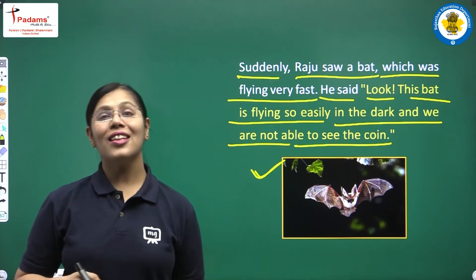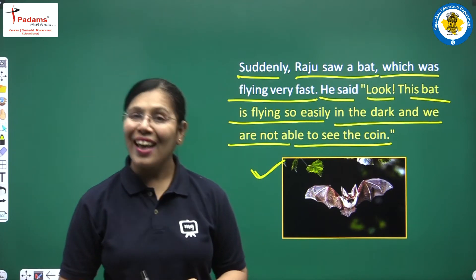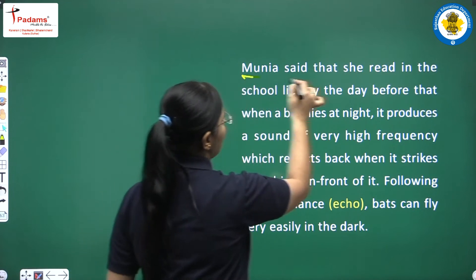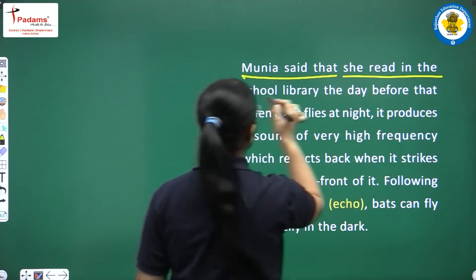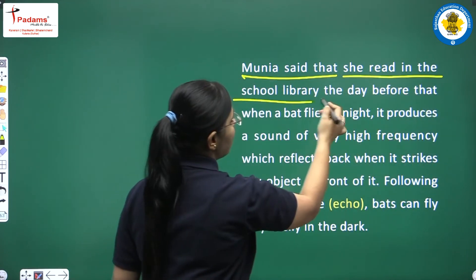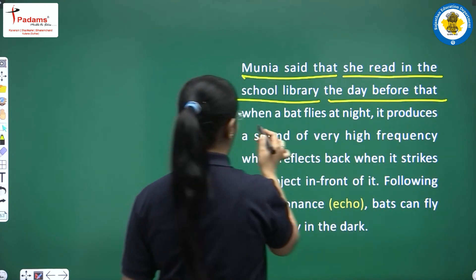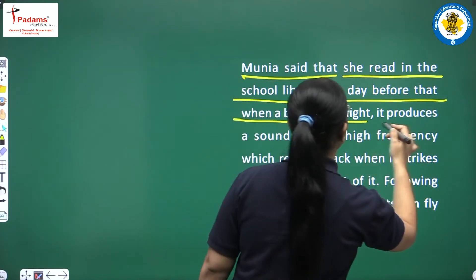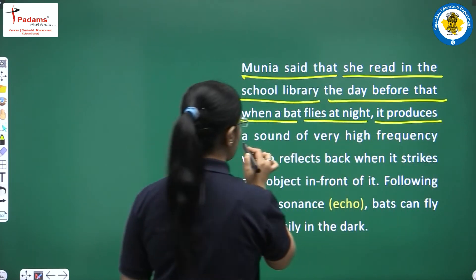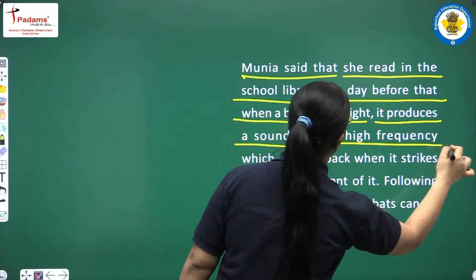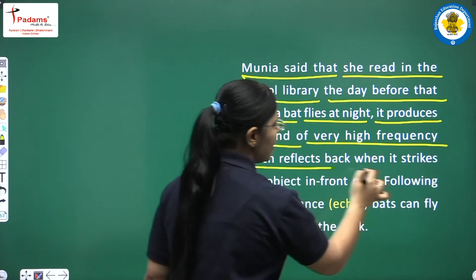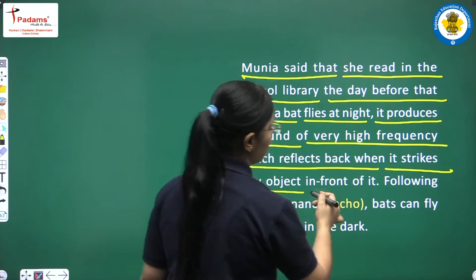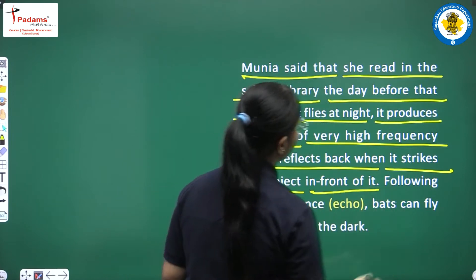Muniya said that she had read in the school library that when a bat flies at night, it produces a sound of very high frequency, which reflects back when it strikes any object in front of it.